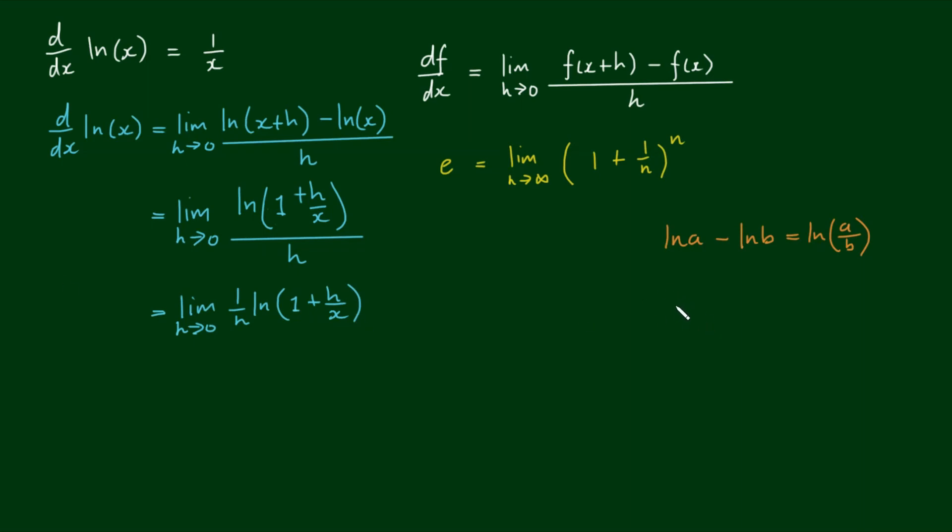Now another log law that we can put to use is that a times the log of b we can rewrite as log of b to the power of a. So the coefficient at the front simply moves up to being a power for what's inside the logarithm. So the limit as h approaches 0 of ln[(1 + h/x)^(1/h)]. Now can you see here it's starting to look a little bit like this expression here, the definition of the letter e.